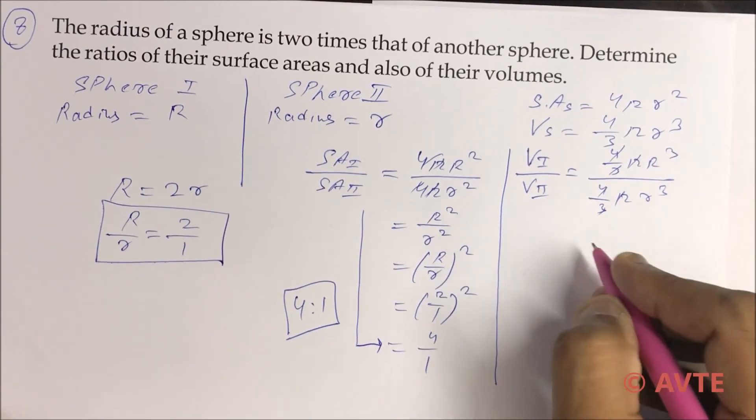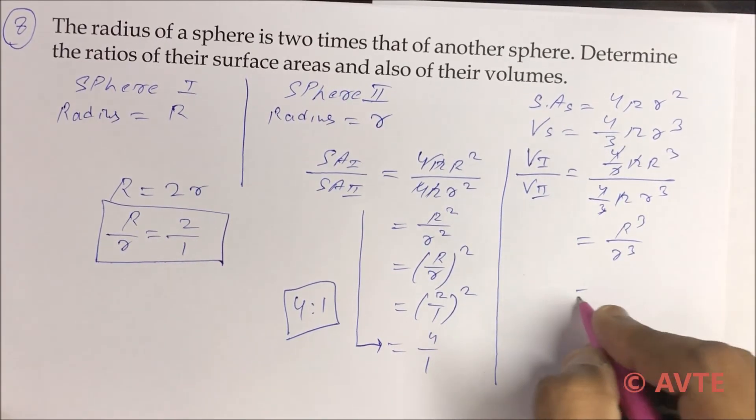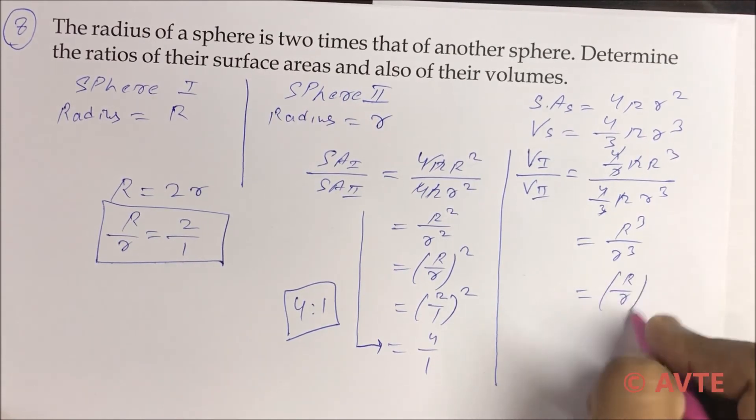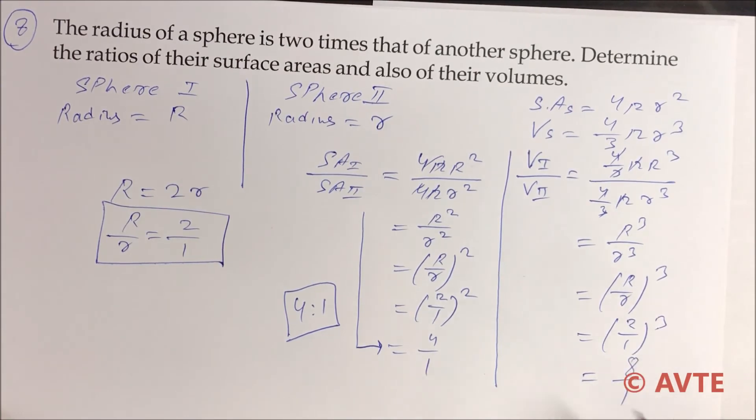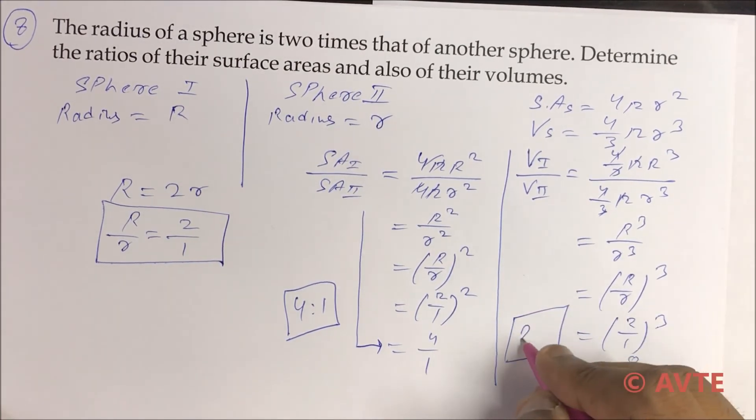This will cancel. This is R cubed by r cubed. That is R by r whole cubed. That is 2 by 1 whole cubed. That is 8 by 1. The answer is 8 is to 1.